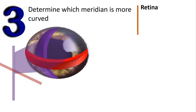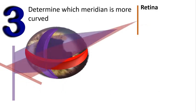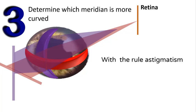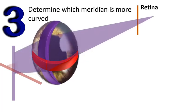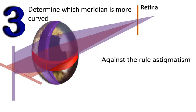Step three: determine which meridian is more curved. The steeper meridian is also referred to as the more myopic meridian, because a more curved meridian will focus light earlier. If the vertical meridian is more curved, this is with-the-rule astigmatism. If the horizontal meridian is more curved or more myopic, this is against-the-rule astigmatism.